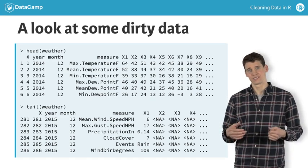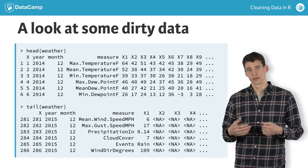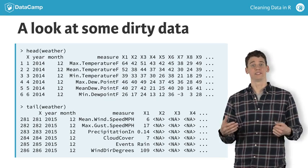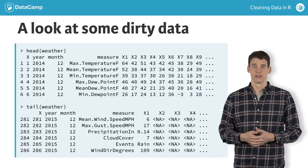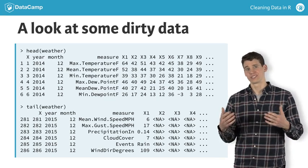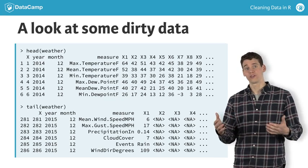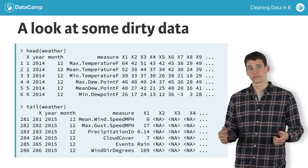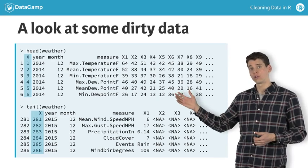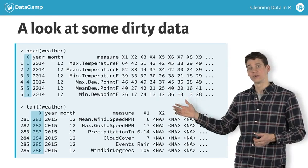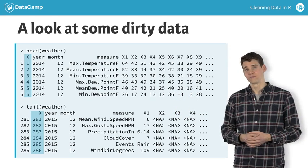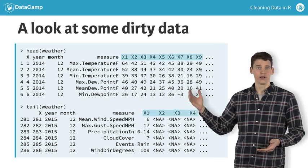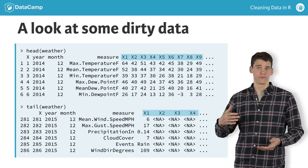Despite the data set's deceivingly neat appearance, a closer look reveals many issues that should be dealt with prior to attempting to build a statistical model to predict weather patterns in the future. For starters, the first column, X, all the way on the left, appears to be meaningless. It's not clear what the columns X1, X2, and so forth represent.